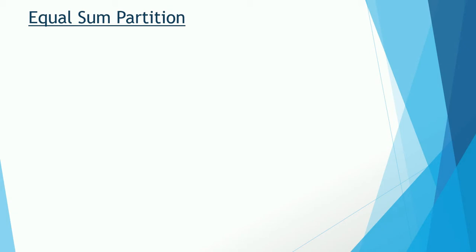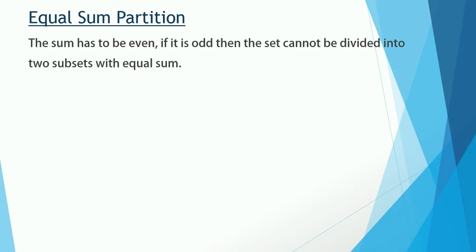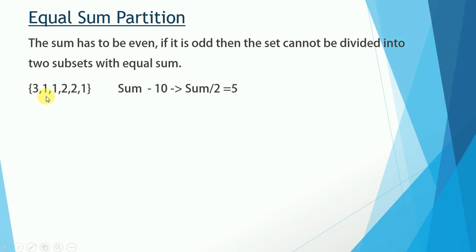We have one important clue: the sum of all integers must be even. If it is odd, the set cannot be divided into two subsets with equal sum — it is false straight away. In our case the sum is 10, which is even, and 10 divided by 2 gives 5, so this passes our first condition.